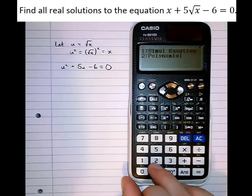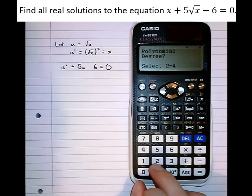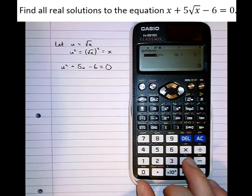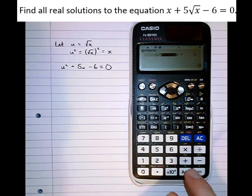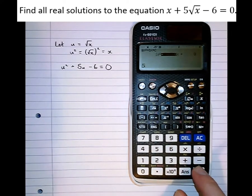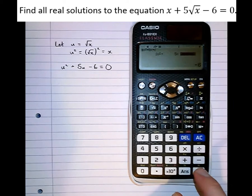So going into equation mode, polynomial degree 2, let's put those coefficients in there. 1u squared plus 5u minus 6 equals,